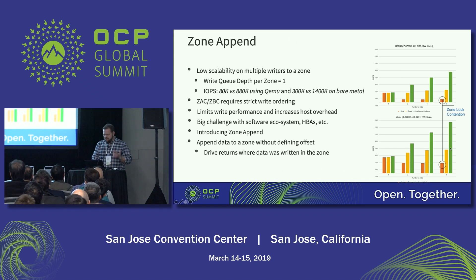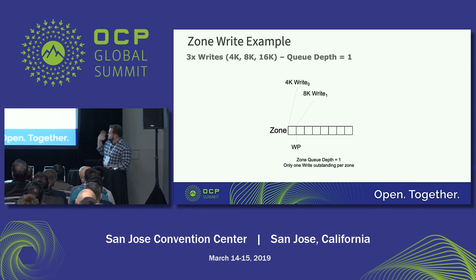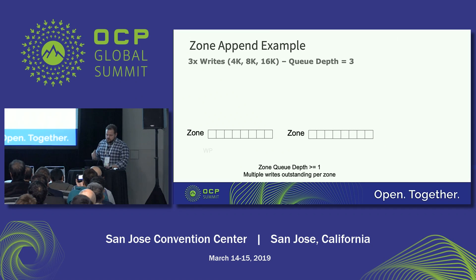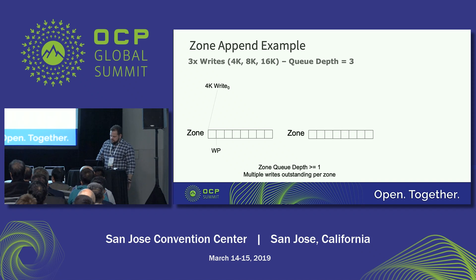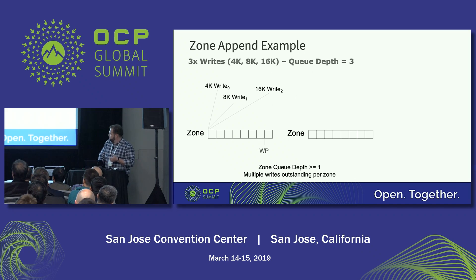Let me give an example. The traditional way: you have a write command, you have your write pointer on the side. You do a 4K write — boom — write pointer updates. You do an 8K write — boom — write pointer updates. You do a 16K and it jumps up. Traditional, works, we know how this works. The host takes care of serializing the IOs. Great for HDDs, not so great for SSDs. With zone append: we send down the command to the first LBA — the starting LBA of the zone — and it advances the write pointer. We do the 8K to the same address in the zone, and then the drive, instead of us telling it exactly where to place data, tells us where it put its data within the zone. All this flows together and it doesn't matter the order.